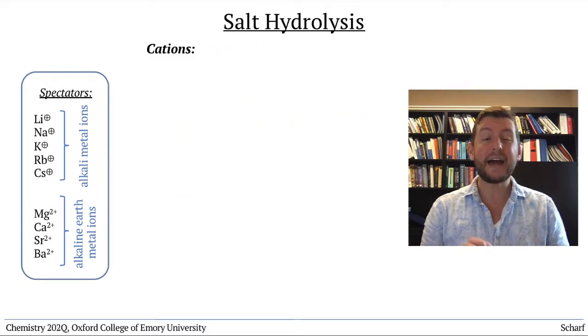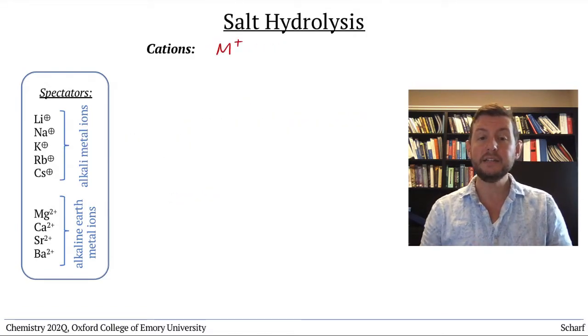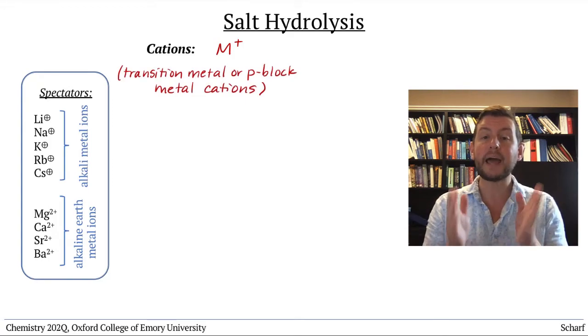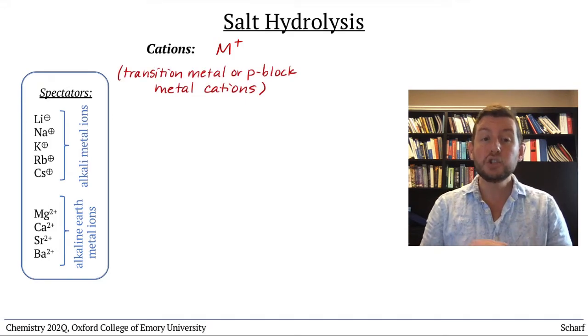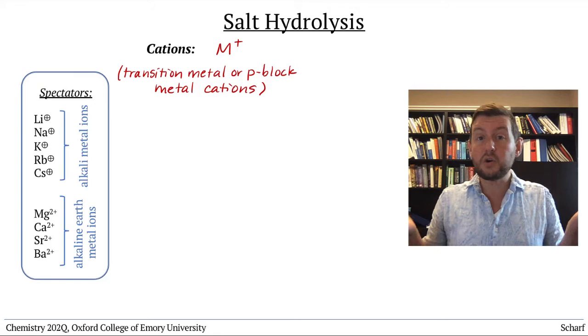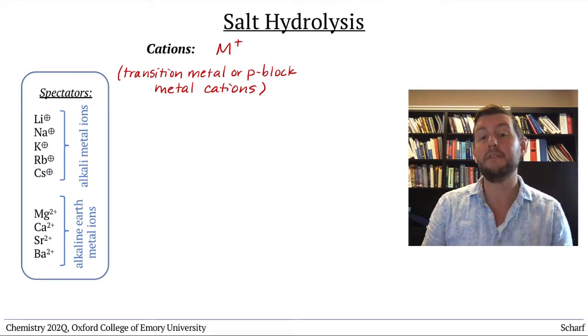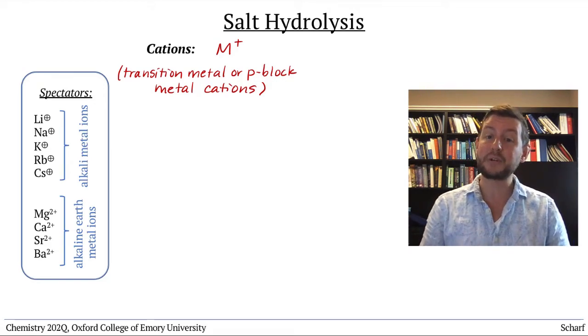Other cations, especially metal cations from the transition metals and P-block, don't have hydrogens to donate to anything, so they can't behave in the familiar Bronsted-Lowry fashion.